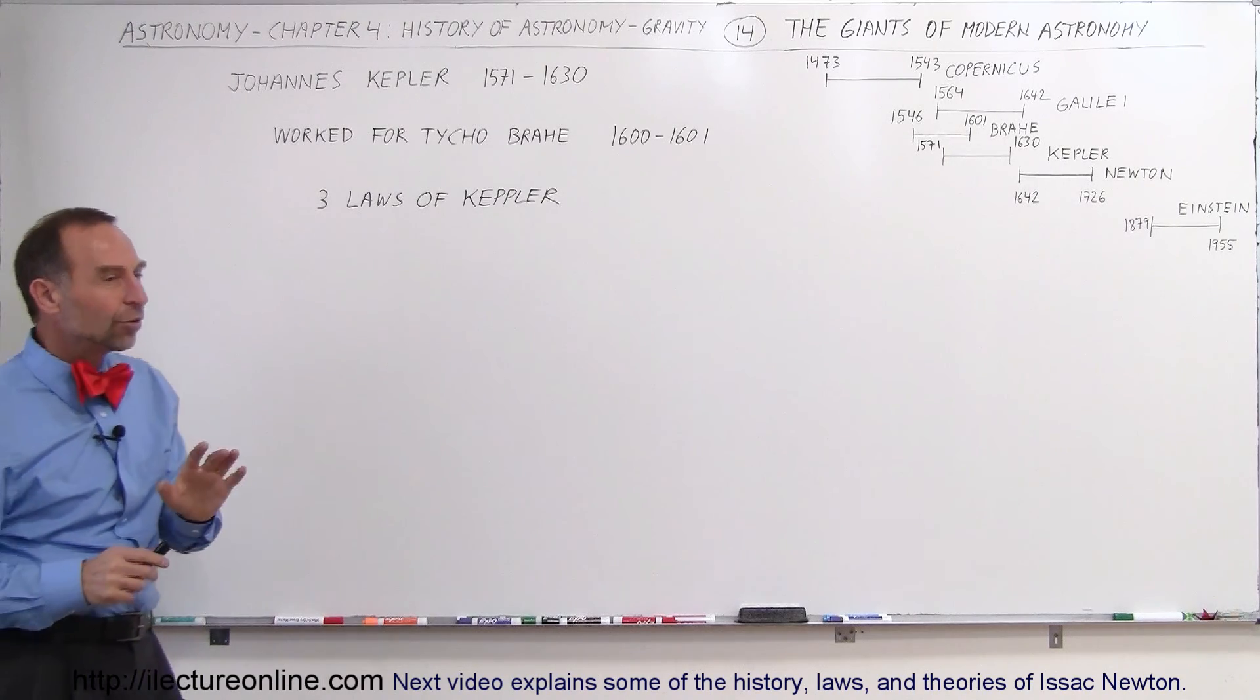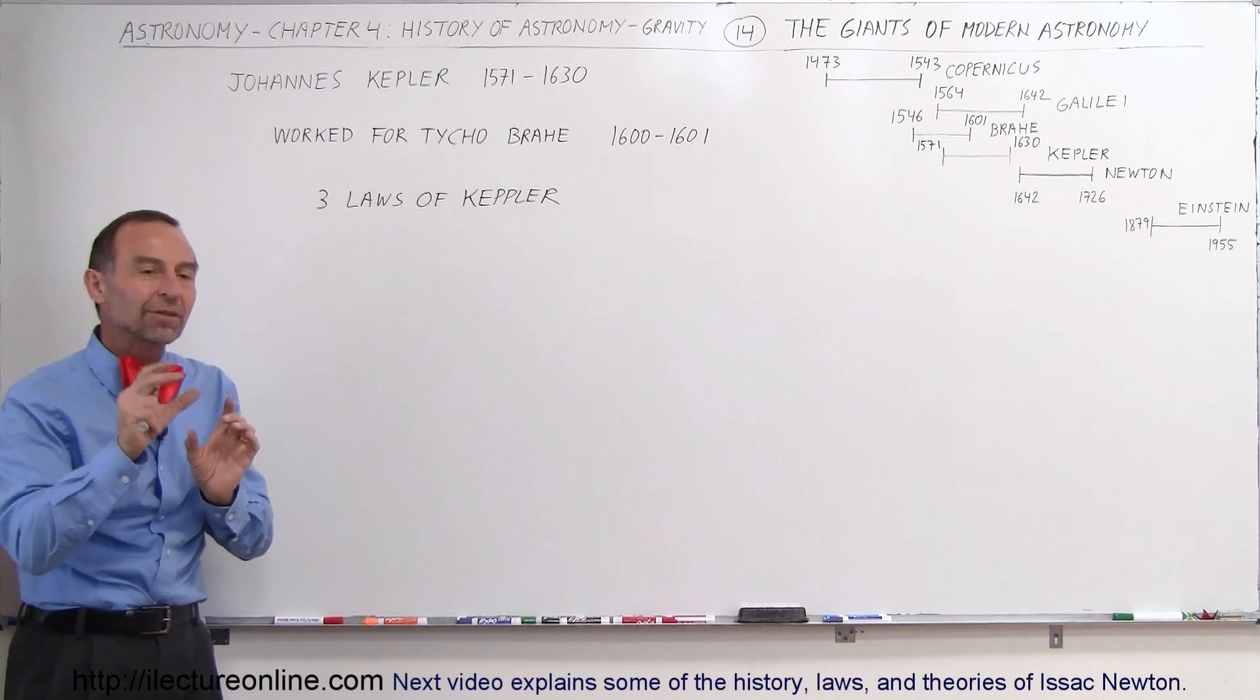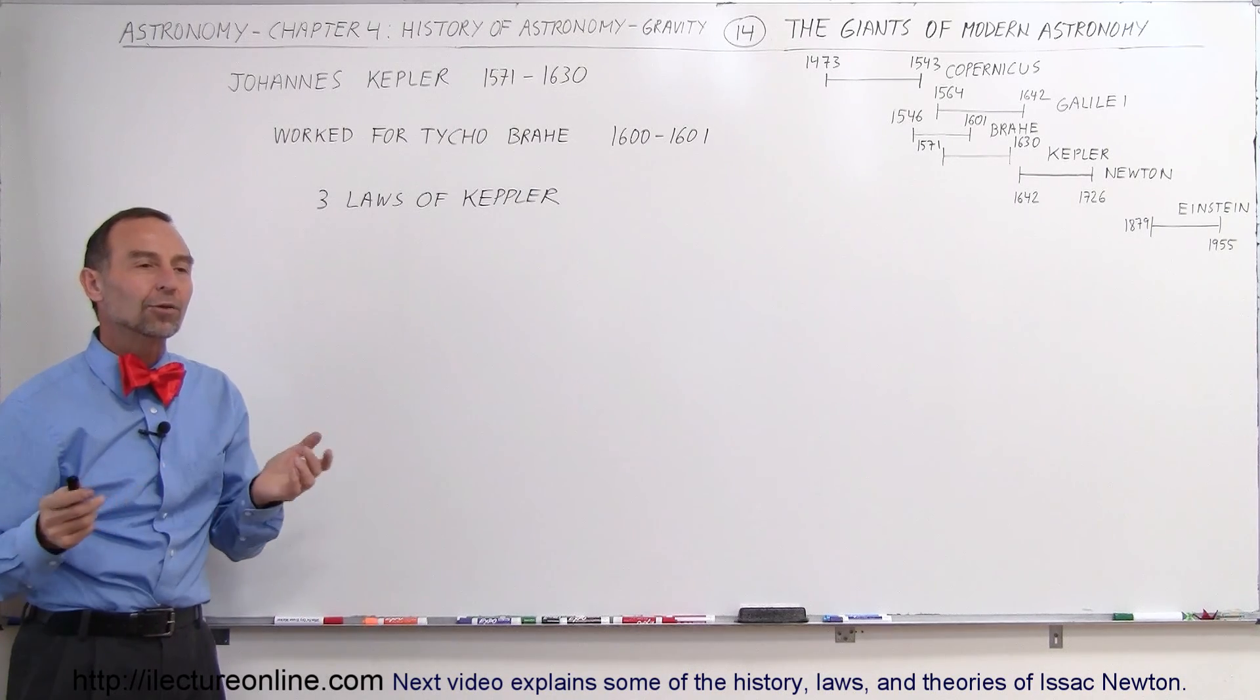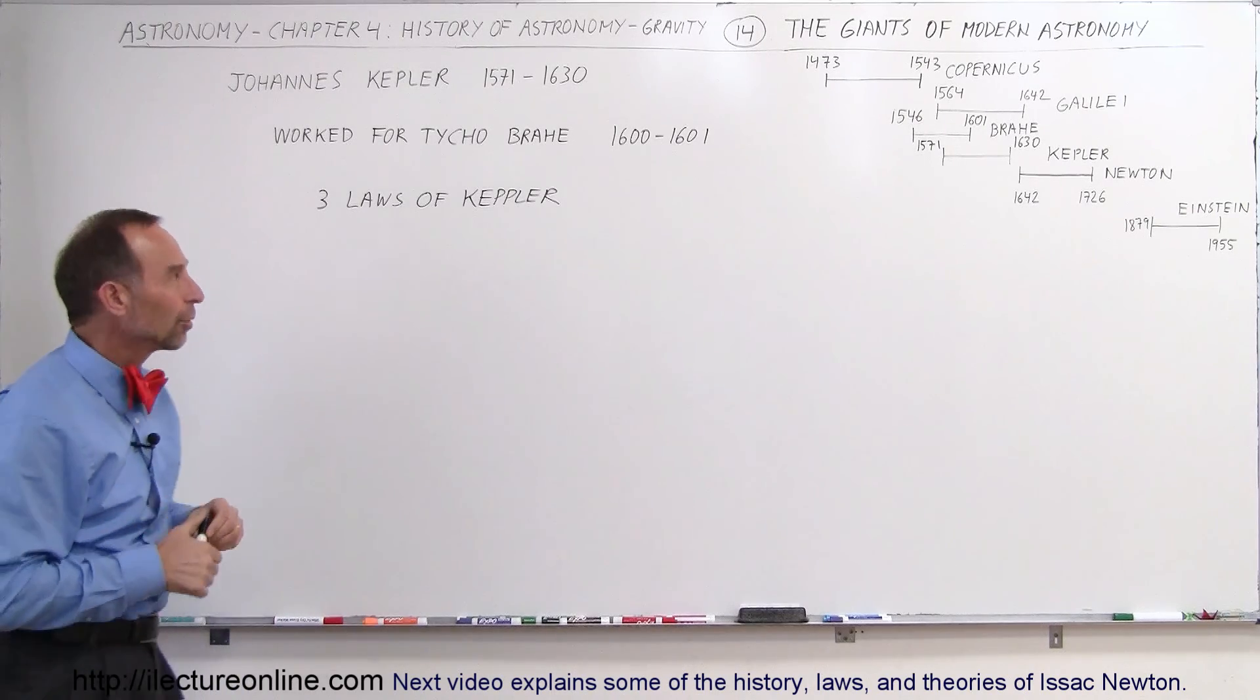Of course, he was kind of afraid to just divulge all the information all at once, so he just gave him little bits and pieces at a time. And he wasn't paying Kepler very much and Kepler wanted to be able to support his family.